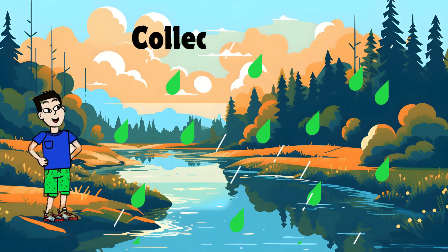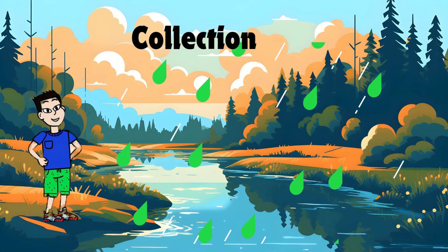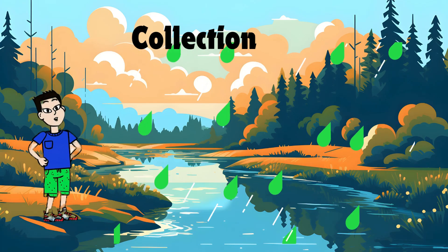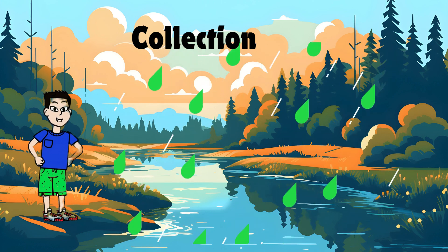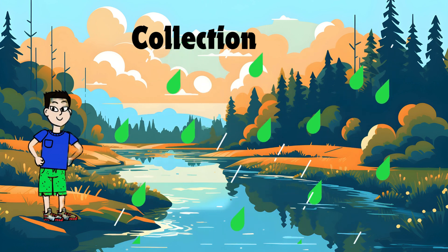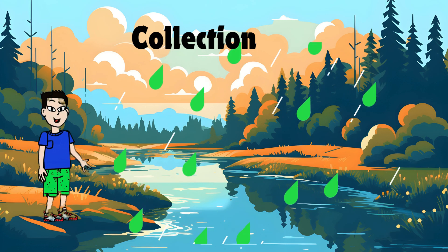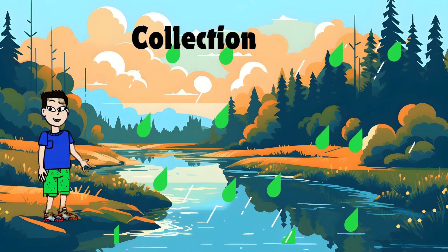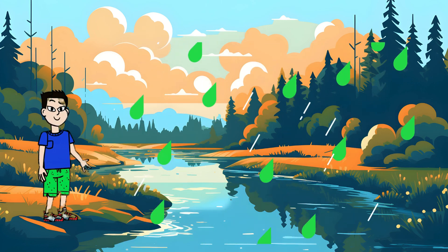The fifth stage is collection. The rain collects in rivers, lakes, and the ground, providing water for plants, animals, and people. Then the cycle starts all over again.